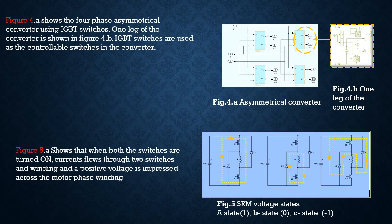As shown, the four-phase asymmetrical converter uses IGBT switches. One leg of the converter is shown in Figure 4.B. IGBT switches are used as the controllable switches in the converter.